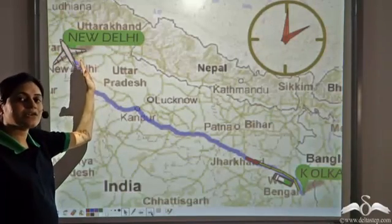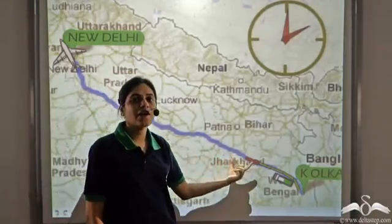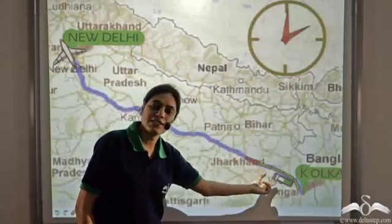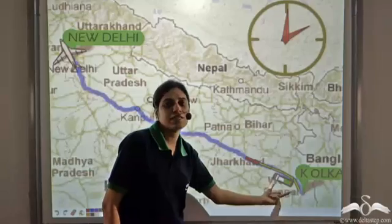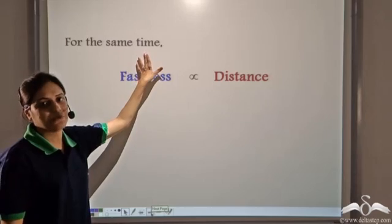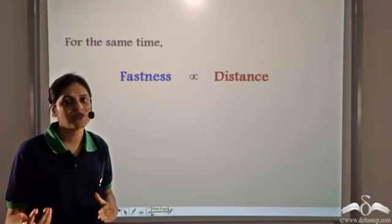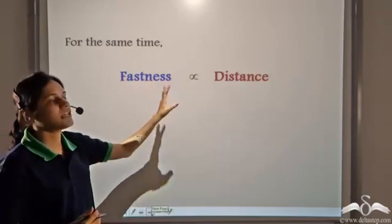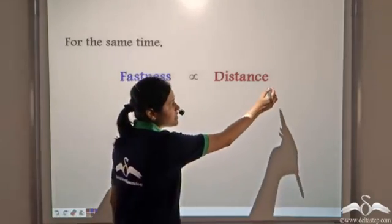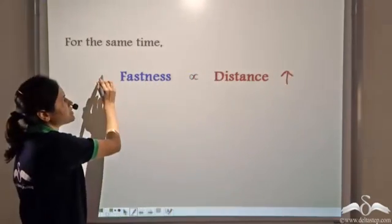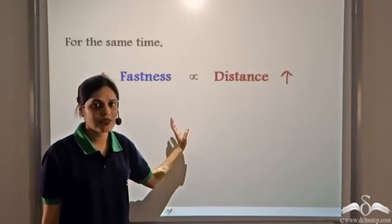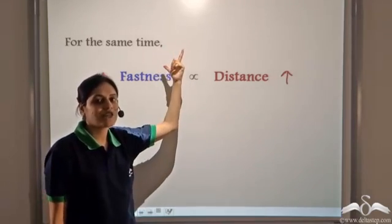We can say that plane is the fastest. Train has covered a greater distance than bus but a lesser distance than plane, so train is faster than bus but slower than plane, and bus is the slowest. So for the same time, fastness is directly proportional to the distance travelled: as distance travelled increases, fastness increases, and as distance travelled decreases, fastness decreases.